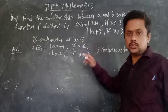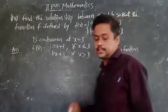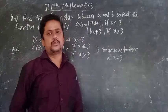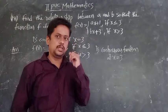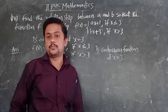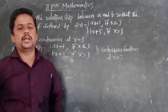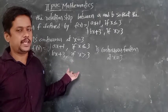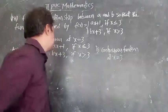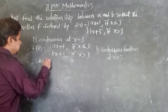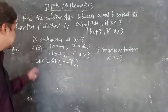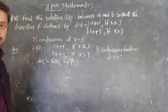The function is continuous at x = 3. First write the given data, then think about what condition to use. For continuity you can use the formula: limit as x tends to c of f(x) = f(c), or equivalently LHL = RHL = f(c). So the condition is LHL = RHL = f(3).